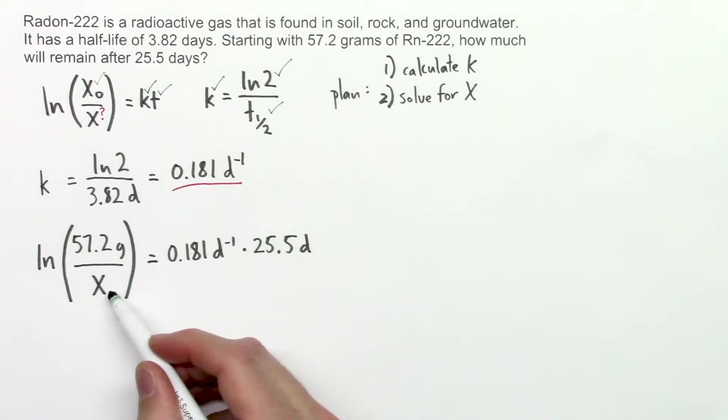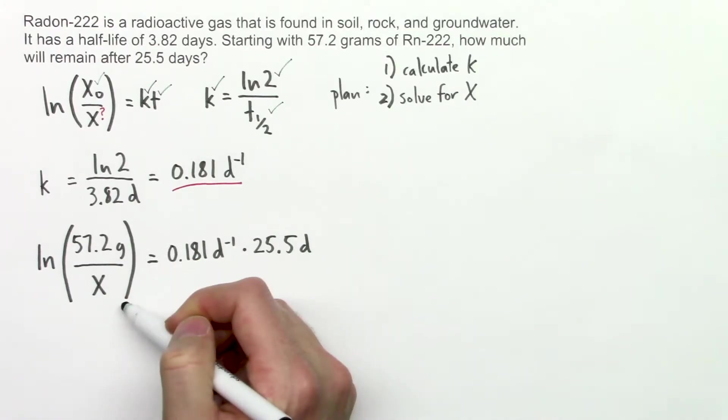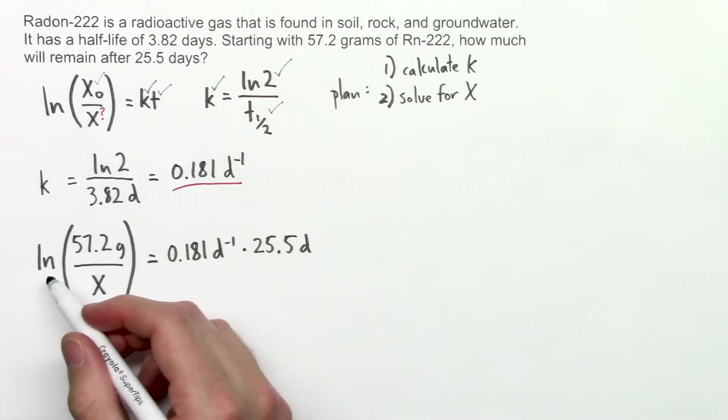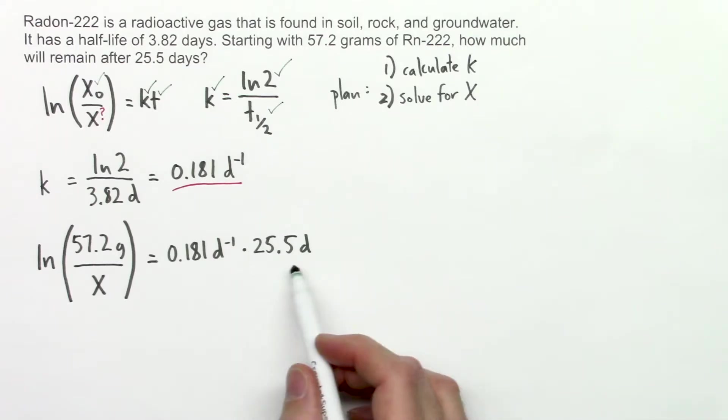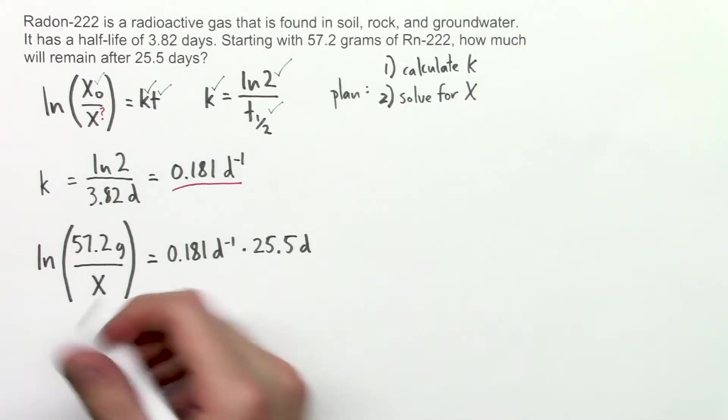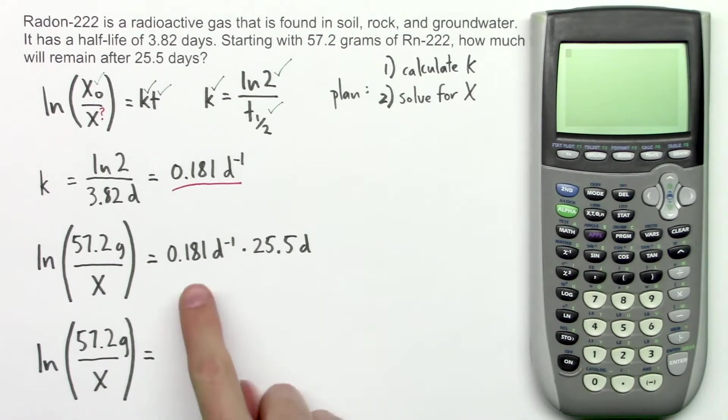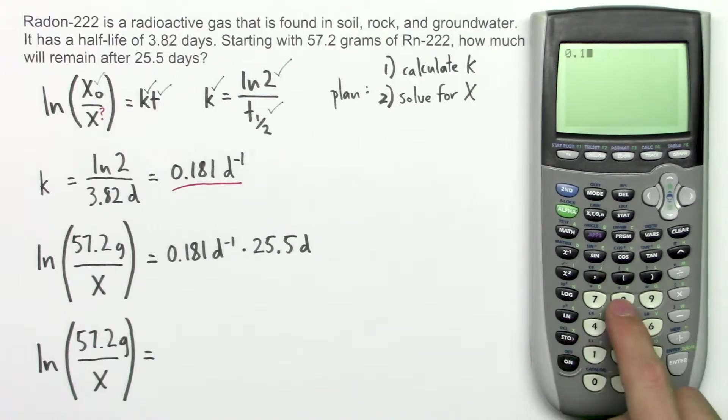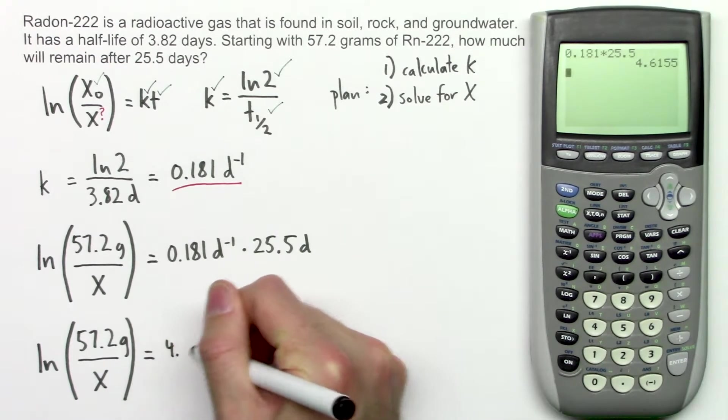We're solving for x here. We eventually want to rearrange the equation so we can get x by itself, but we can't move x until we get rid of this natural log function that's around the fraction. We'll do that in a minute, but there's something that we can do right now. We can multiply these two numbers together. So we'll rewrite this, and then do 0.181 times 25.5. And that gives us, rounded to three significant figures, 4.62.